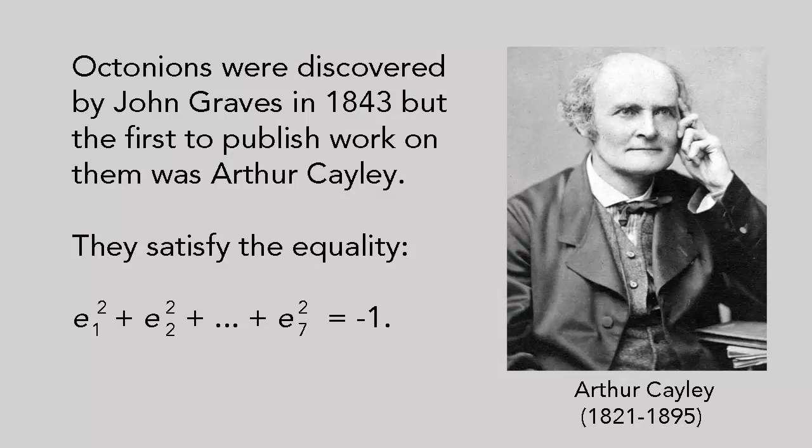Inspired by Hamilton's discovery, fellow Irish mathematician John Graves came up with yet another new system of numbers which he called octonions. He was slow to publish his findings, however, and was pipped to the post by the Englishman Arthur Cayley, who introduced octonions to the world in 1845. Octonions are sums of multiples of one and seven other values, often simply called e1, e2, all the way up to e7.